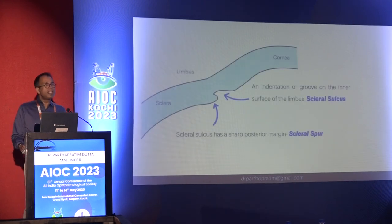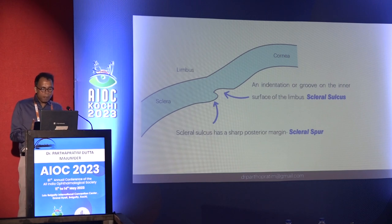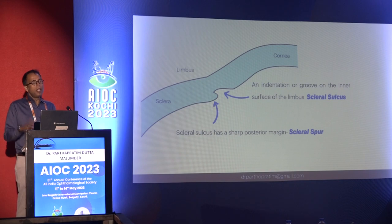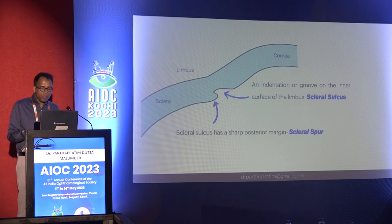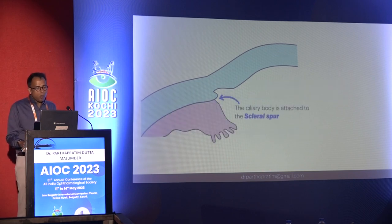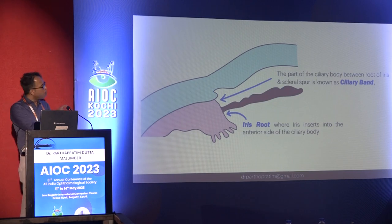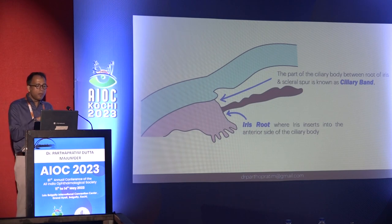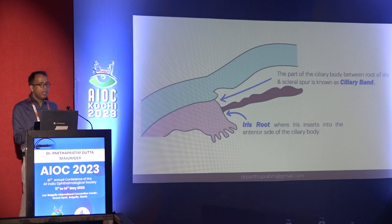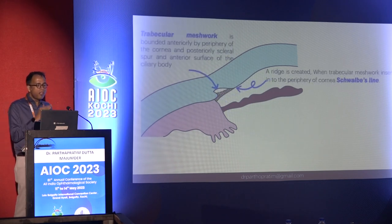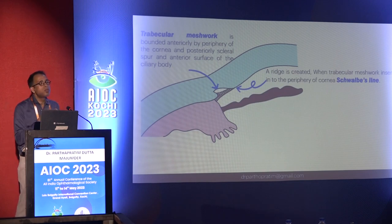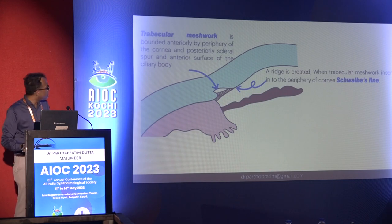Let's start with A for angle of the anterior chamber. Just adjacent to the limbus there is an indentation on the inner surface of the limbus called the scleral sulcus. The scleral sulcus has a sharp posterior margin known as the scleral spur. The ciliary body is attached to the scleral spur. You can see how the iris is placed — where the iris joins is called the iris root, and the part of the ciliary body between the root of the iris and the scleral spur is known as the ciliary band.